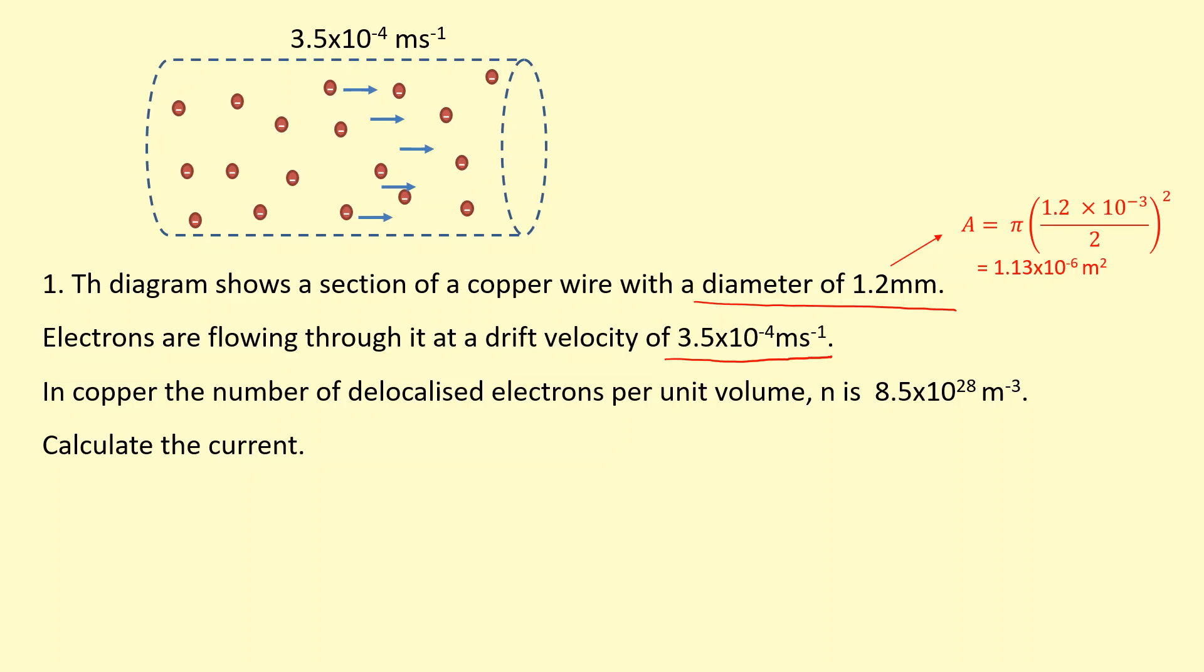We've got electrons flowing through at a drift velocity of 3.5 times 10 to the 4 meters per second, because that's the speed towards the right, as shown in the diagram. In copper, the number of delocalized electrons per unit volume, represented by the letter N, is 8.5 times 10 to the 28 per meters cubed.